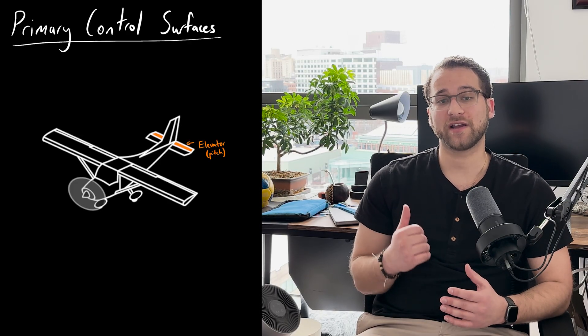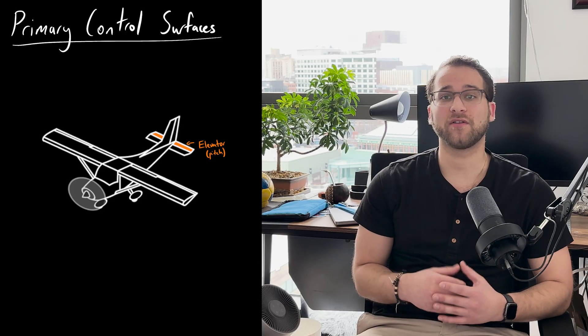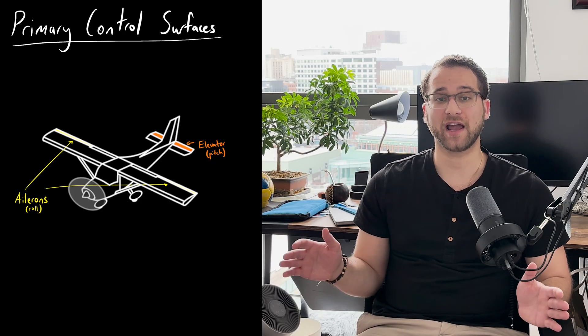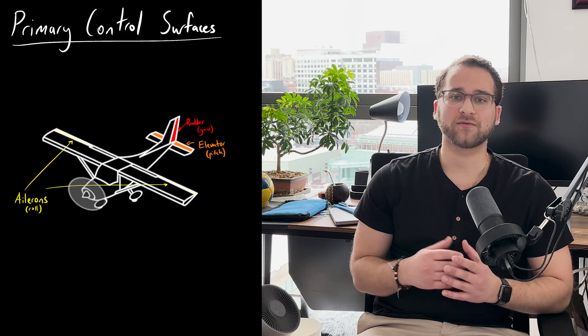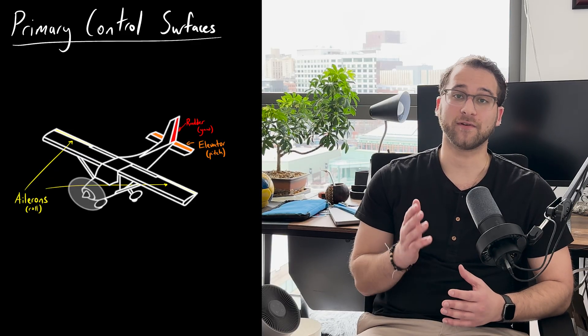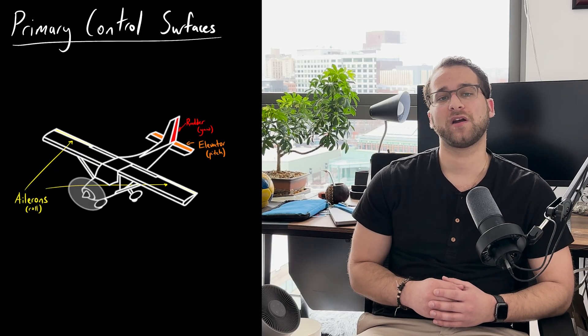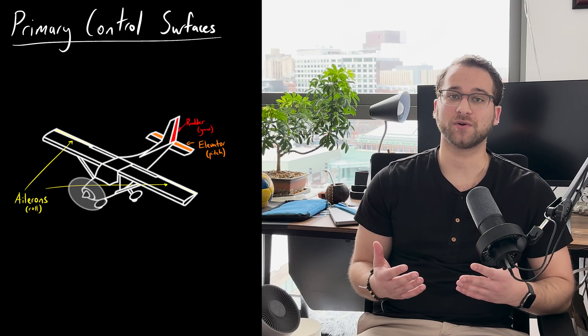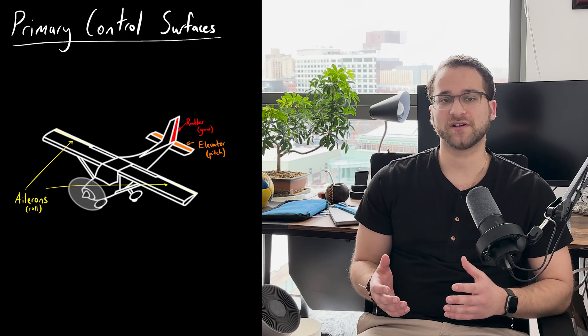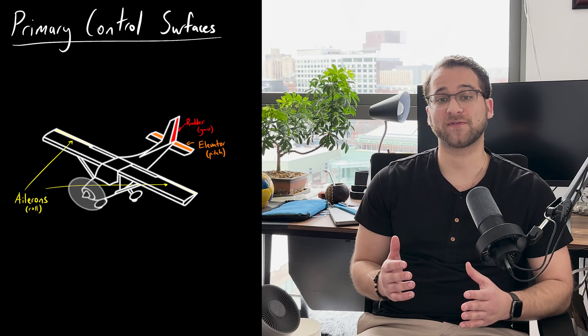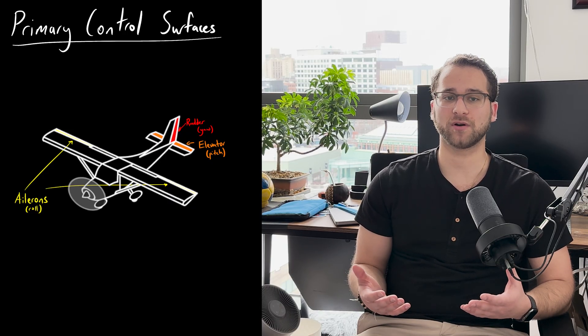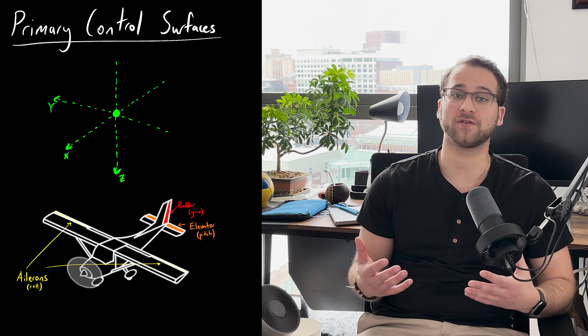The elevator is located on the trailing edge of the horizontal stabilizer on the tail of the plane. The ailerons are located on the outside trailing edges of the wings. And the rudder is located on the trailing edge of the vertical stabilizer. These surfaces work by turning the air flow, effectively creating lift in the direction of rotation. Each surface is usually located as far as possible from the center of mass of the plane in order to maximize the moment they create, or in other words, to allow for the most efficient rotation.